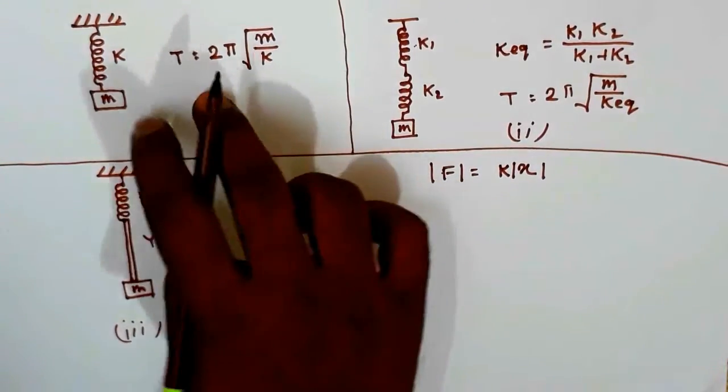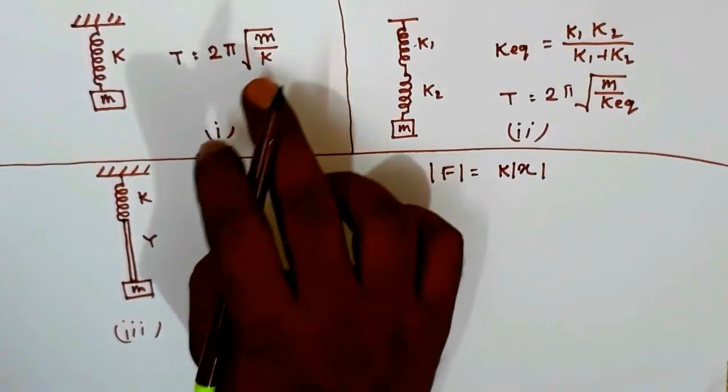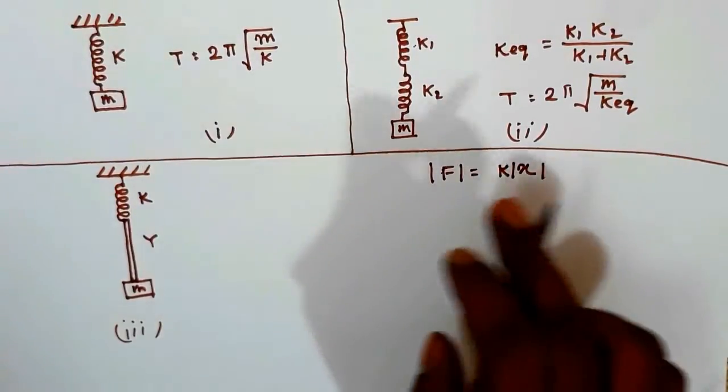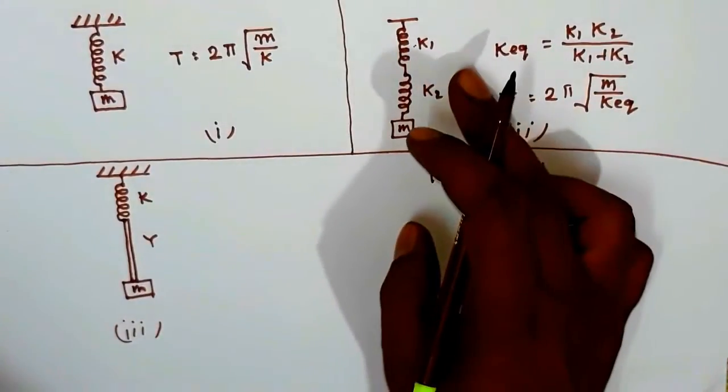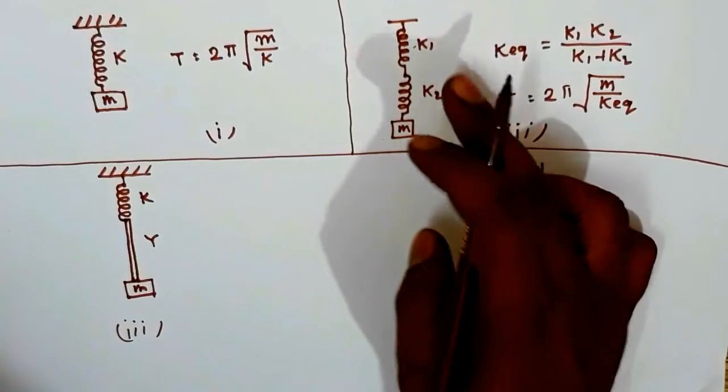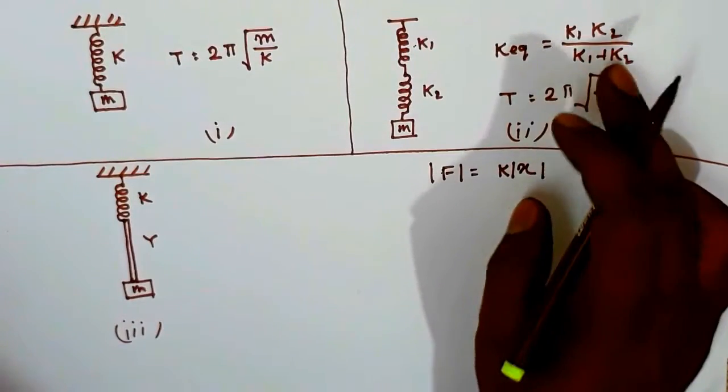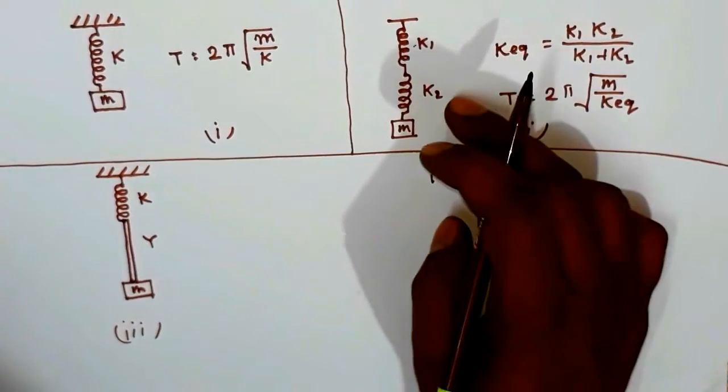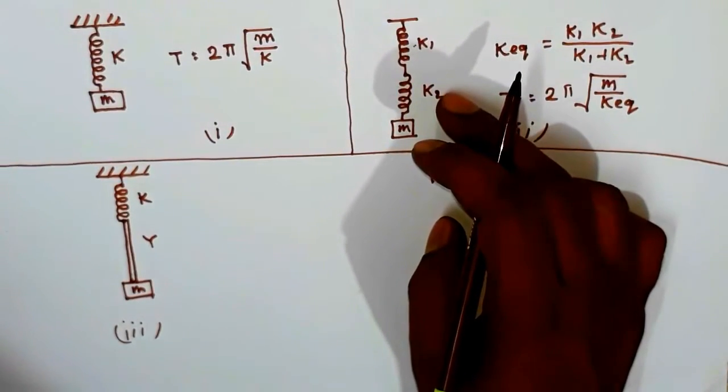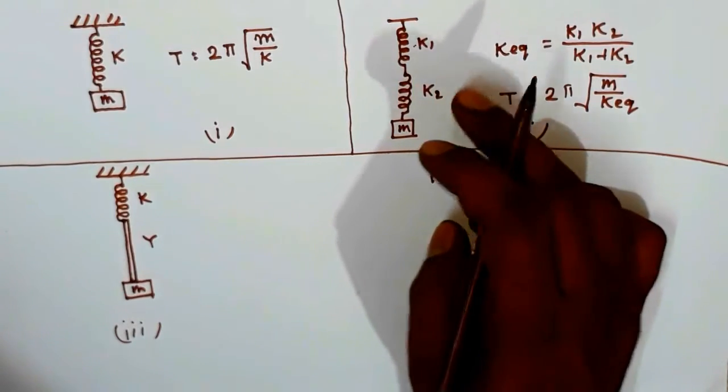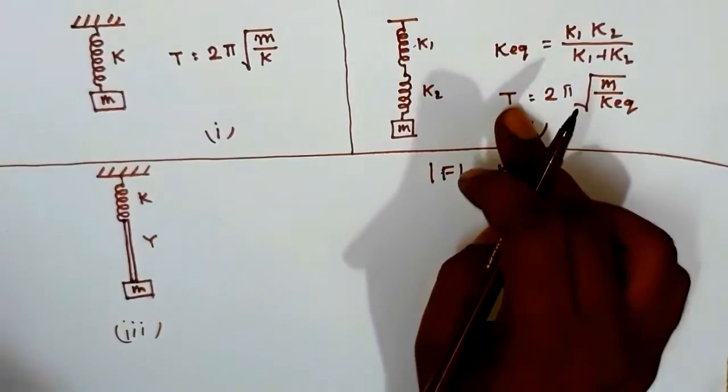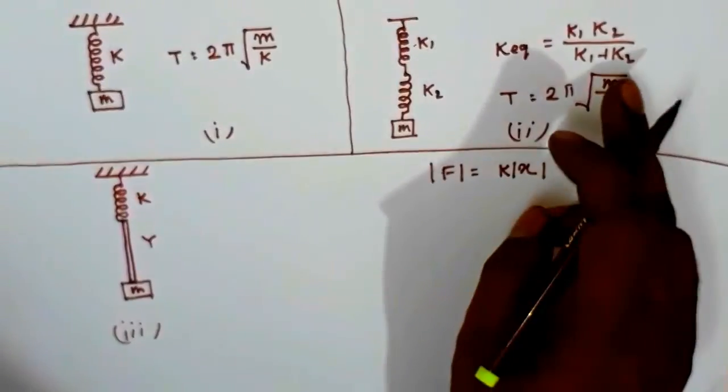You also know that if two springs are connected in series, then the equivalent spring constant becomes K1*K2/(K1+K2), where K1 and K2 are the force constants of the individual springs. And here the time period T equals 2π√(m/K_eq).